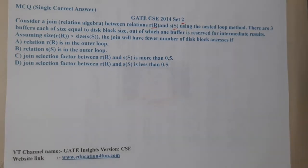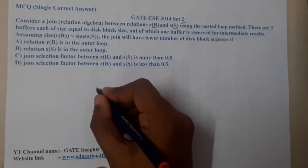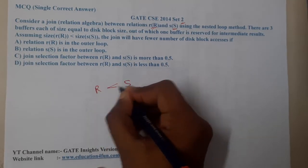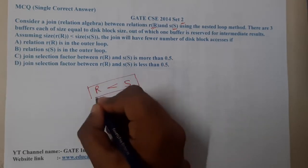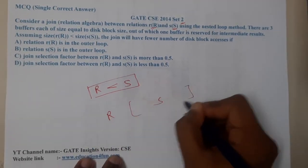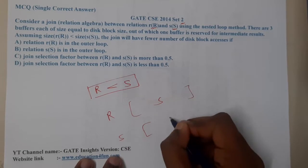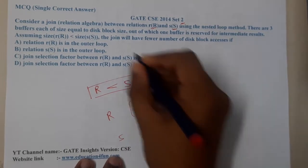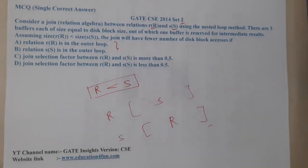To be clear, they are clearly saying that the size of R is less than S, and they are going to link these things like one will be in the inner loop and one will be in the outer loop. These are two different cases. The first two options say which will be better.